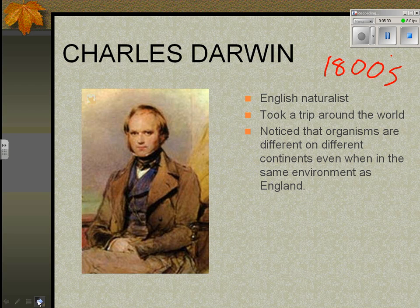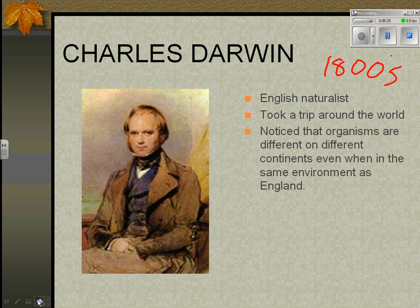When you're on a boat for a long time, you have a lot of time to think. Darwin noticed that when they went to Australia, there were kangaroos — but why don't they live in England? In some parts of Australia the environment is similar. He also noticed that in Africa there were lions even in parts that got cold. He thought: why are there different organisms on different continents?